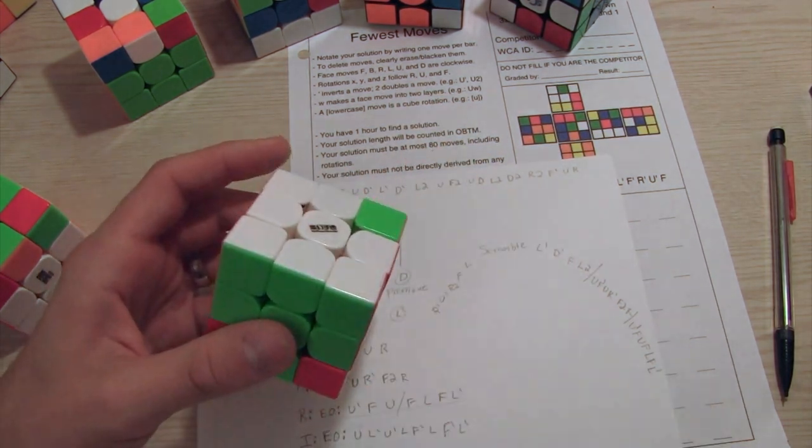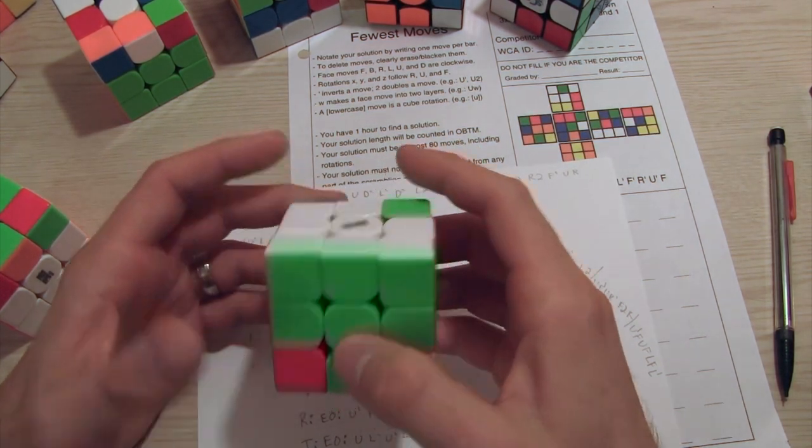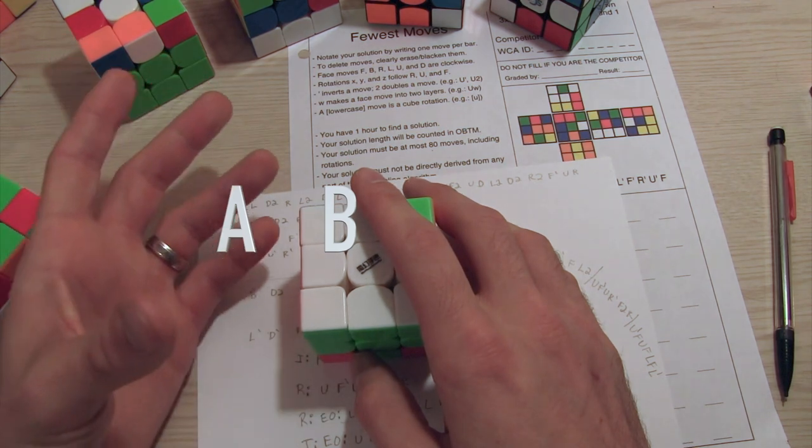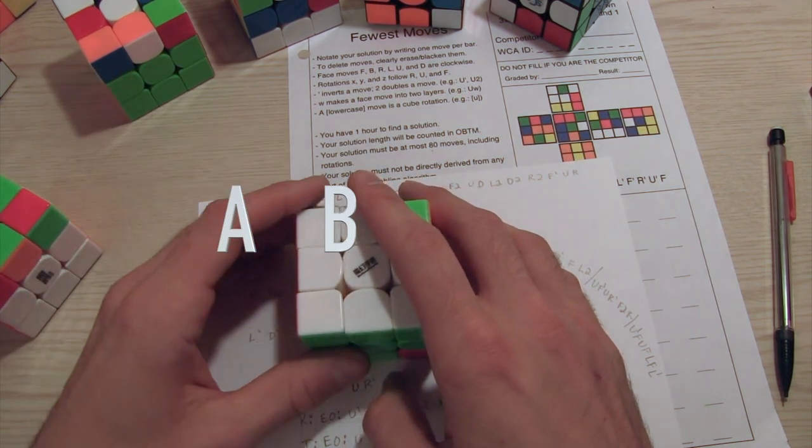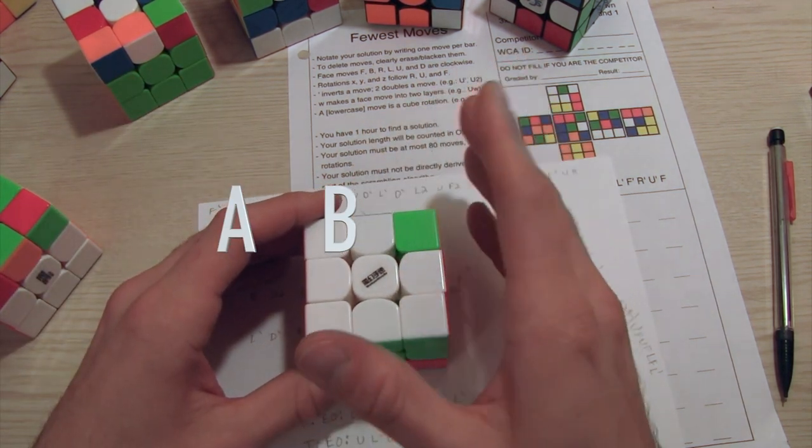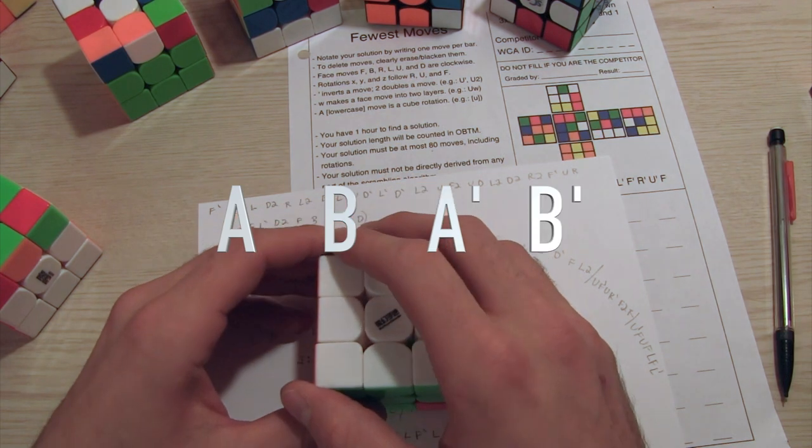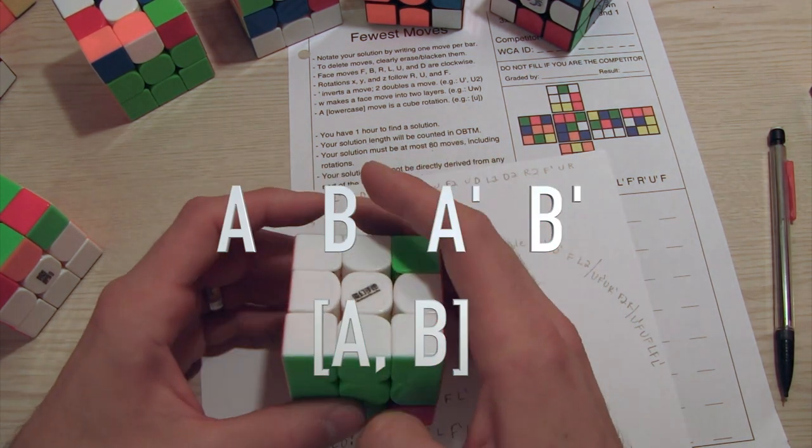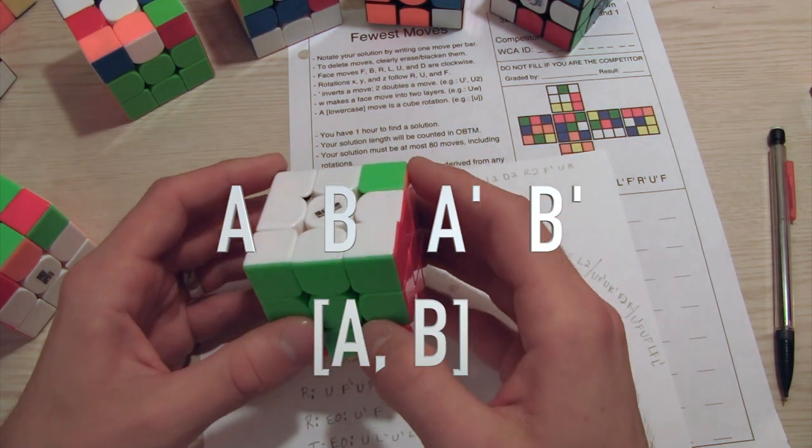Before we get to that, what a commutator is, is a set of moves where it's A, B, so a move that we're going to call A, a move set that's called B, and then the reverse of A, reverse of B. You might see it look like this in print.